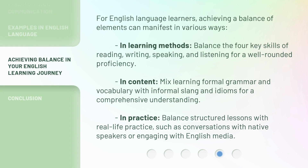For English language learners, achieving a balance of elements can manifest in various ways. In learning methods, balance the four key skills of reading, writing, speaking, and listening for a well-rounded proficiency. In content, mix learning formal grammar and vocabulary with informal slang and idioms for a comprehensive understanding. In practice, balance structured lessons with real-life practice, such as conversations with native speakers or engaging with English media.